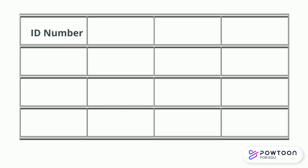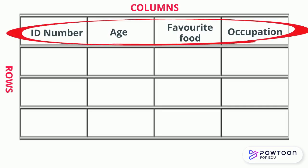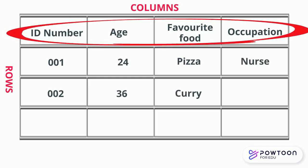Data sets are made up of rows and columns. For a survey, you'll find the variables in the columns across the top, while each individual's responses to the survey are filled in across the row.